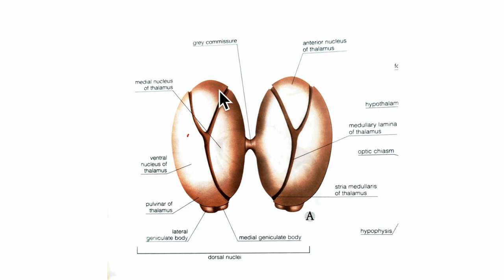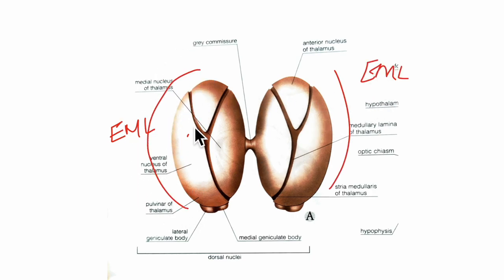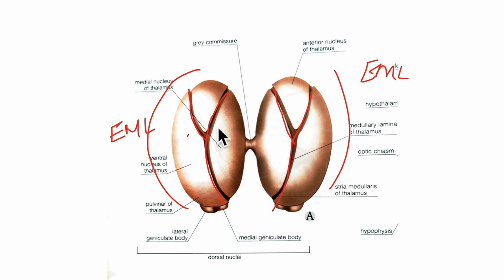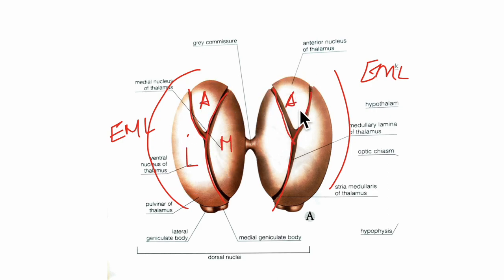Next let's look at the structure and nuclei of the thalamus. First let's look at the white matter. We have an external medullary lamina that covers the lateral surface. Then we have an internal medullary lamina that divides the thalamus into three parts. Here you can see a Y-shaped structure — the internal medullary lamina — which is a part of the white matter of the thalamus. It divides the thalamus into three parts: anterior, medial, and lateral.